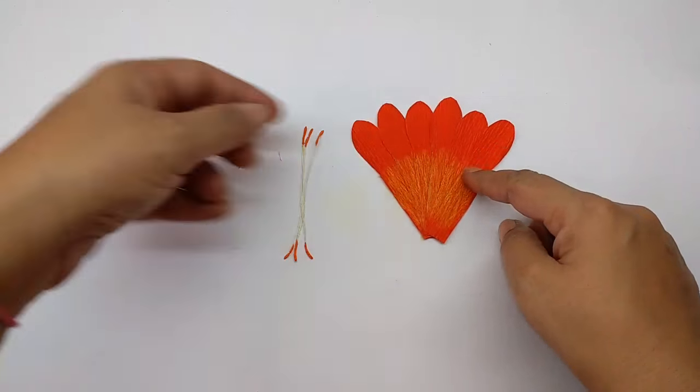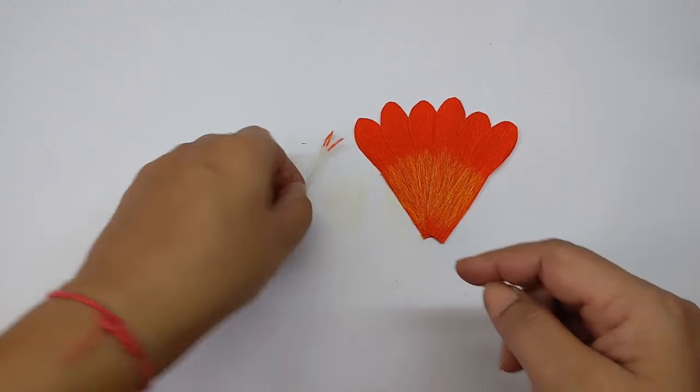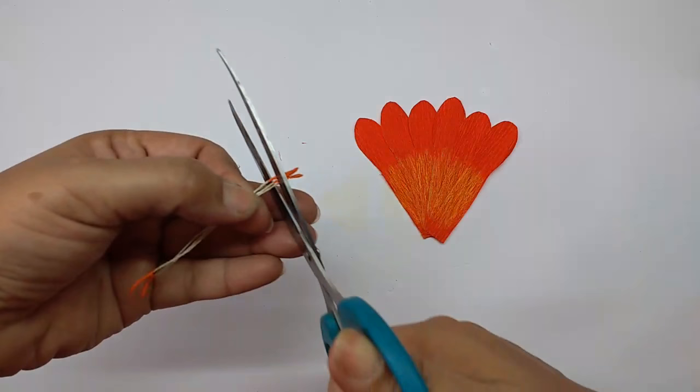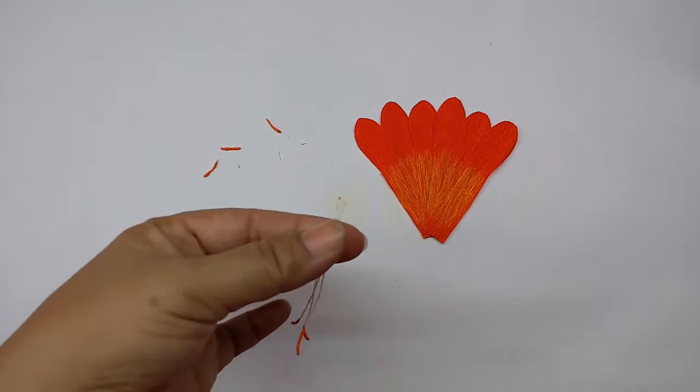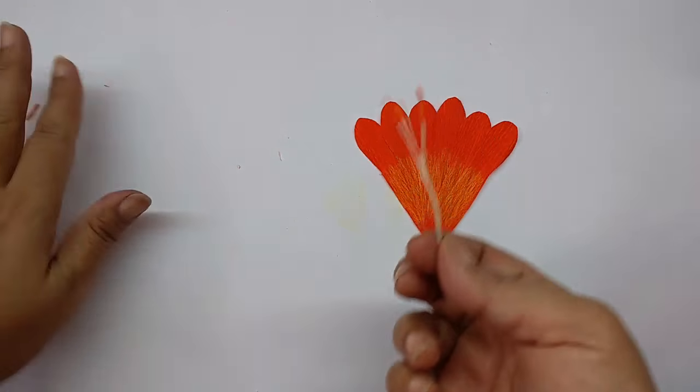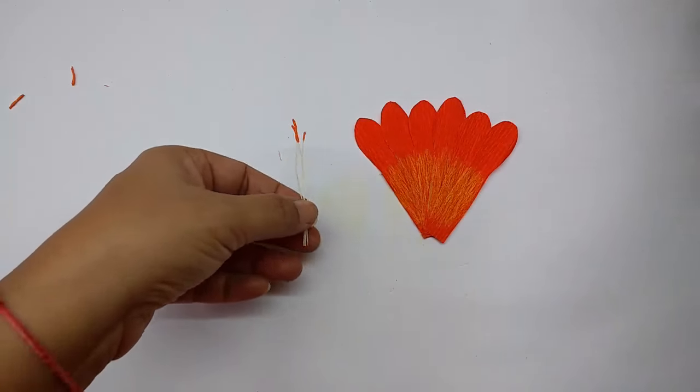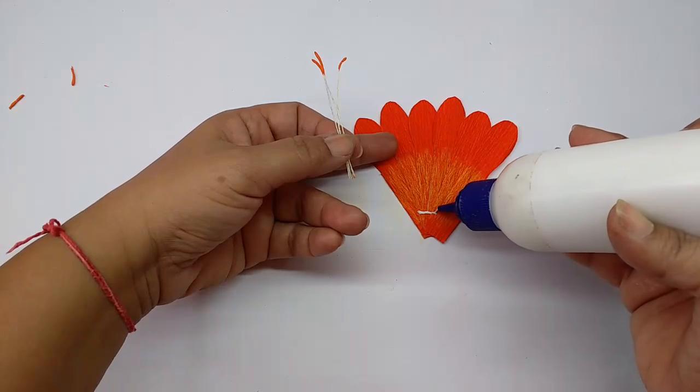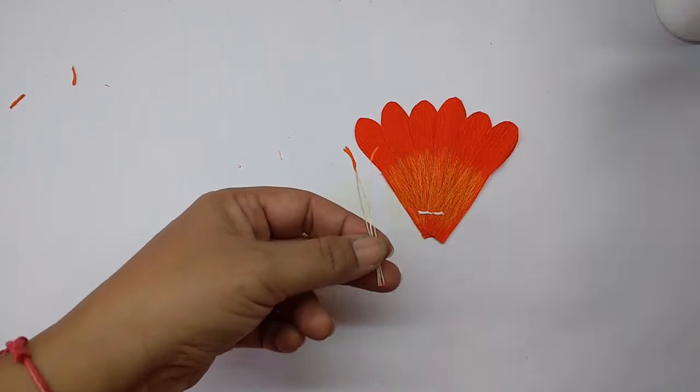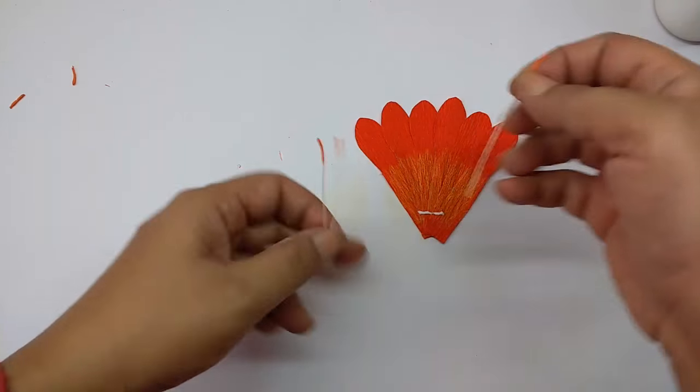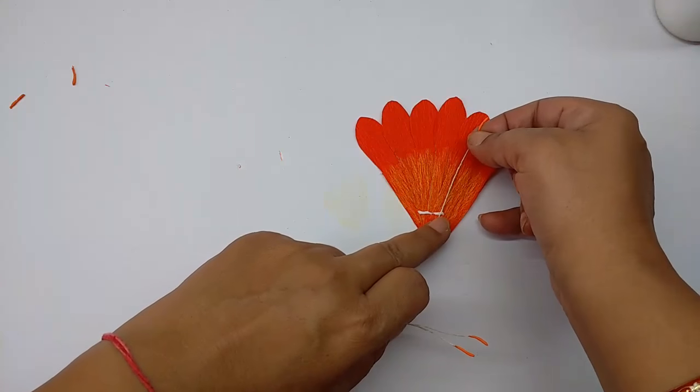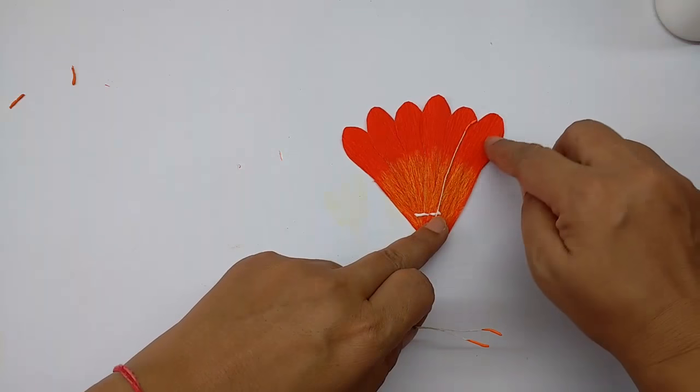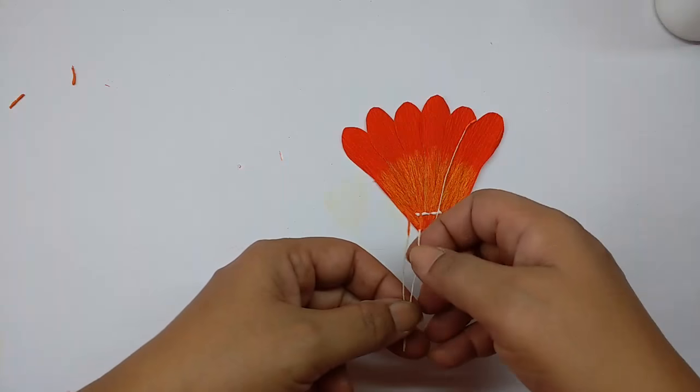Now take three pips and cut off one side so you have three long pips like this. Apply glue on the petal just a little bit and then just stick these pips. They should almost touch the outline of the petals.